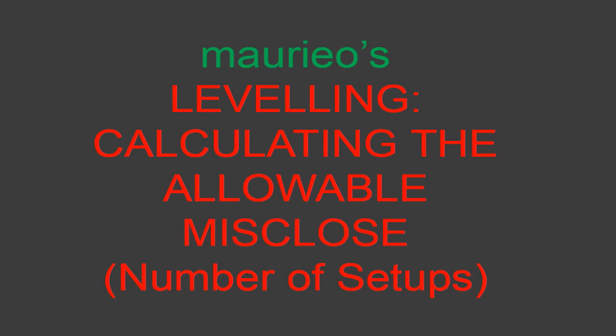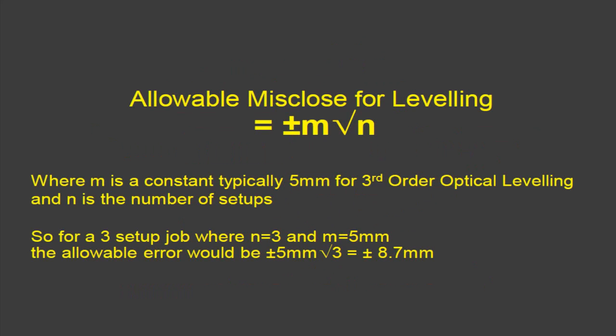In some cases the length of the level run can be very short but the number of setups can be quite great, and this can have the effect of distorting or giving a false impression of what the allowable misclose should really be. Let's get down to the nitty-gritty here — the allowable misclose for leveling, the formula based on the number of setups, is equal to plus or minus m times the square